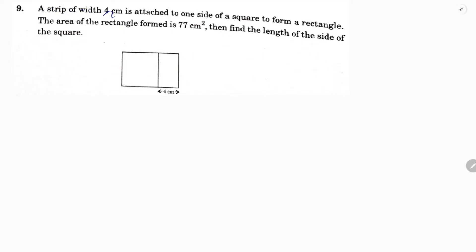A strip of width 4 cm is attached to one side of a square to form a rectangle. Here is a square, and a strip of 4 cm is attached to form a rectangle. The area of the rectangle is 77 cm² — find the length of the side of the square.